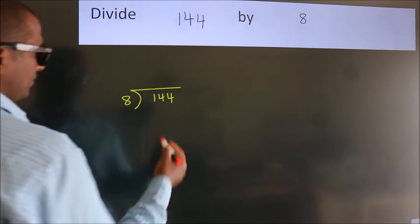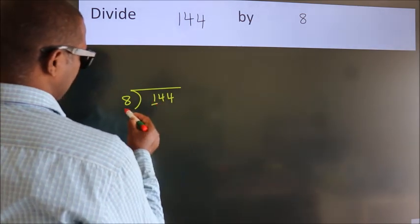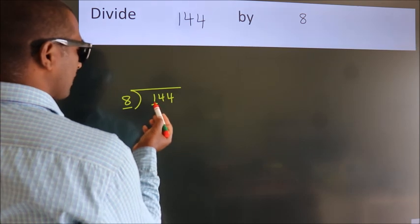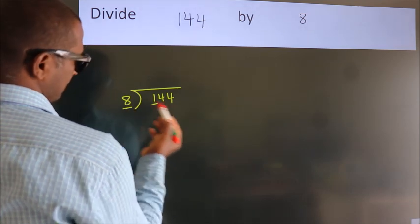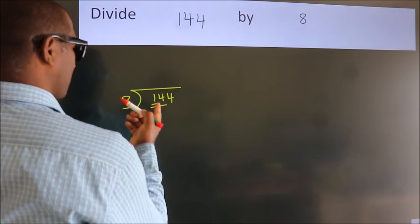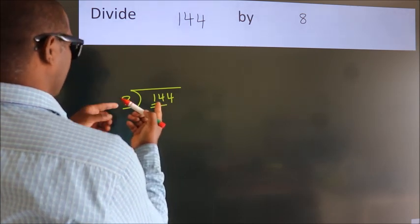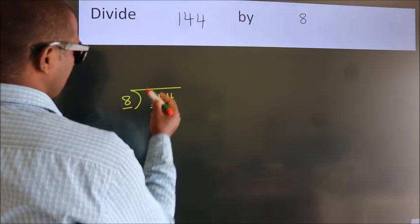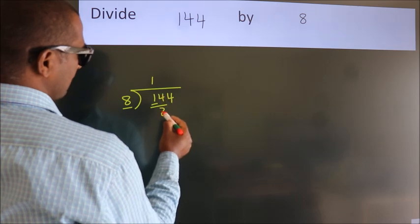Next, here we have 1, here 8. 1 is smaller than 8, so we should take 2 numbers: 14. A number close to 14 in the 8 table is 8 once 8.